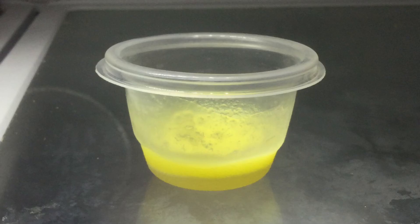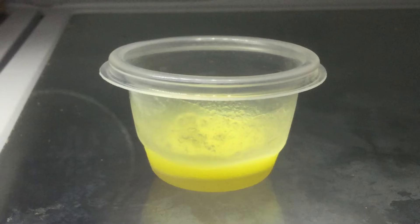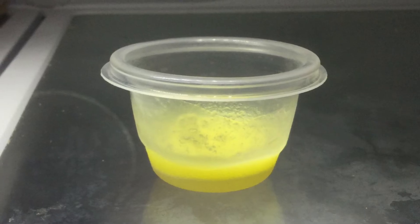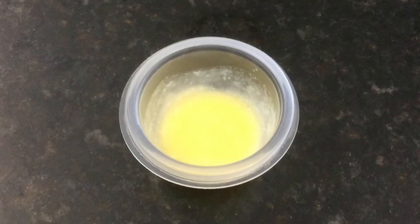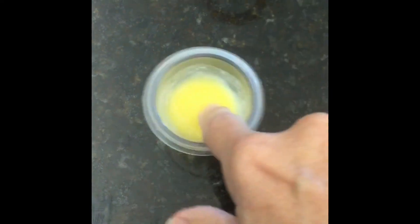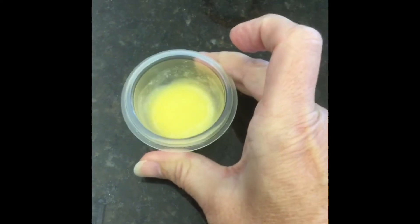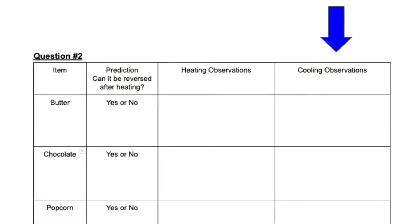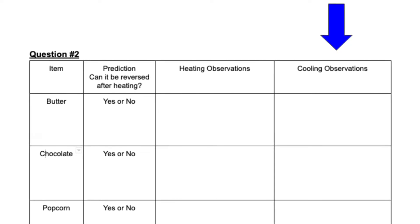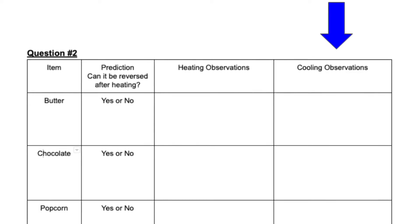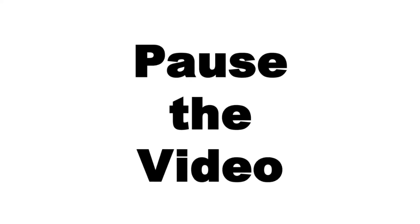After heating the butter, I placed it in the refrigerator overnight to see what it would do, and here's what it looks like. In the last column on your worksheet, under cooling observations, write down what you observed after the butter was cooled. Pause the video, write your observations, and start the video again when you're ready.